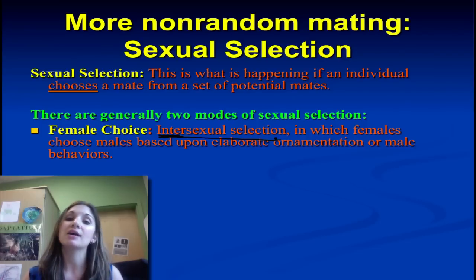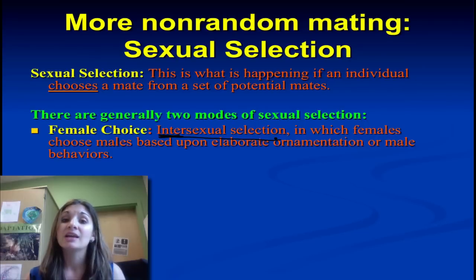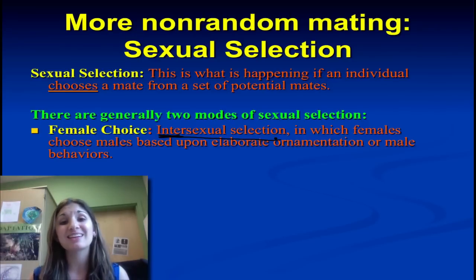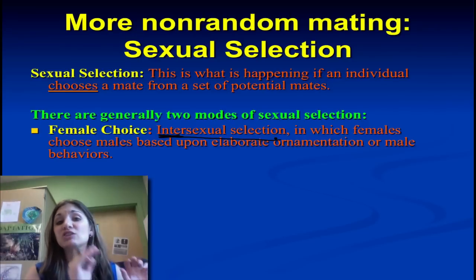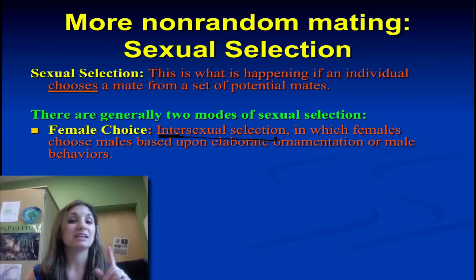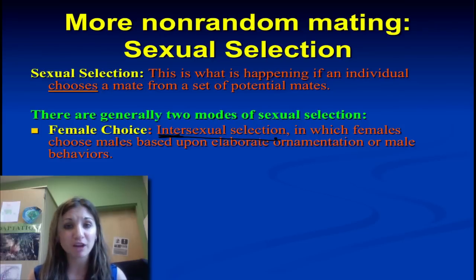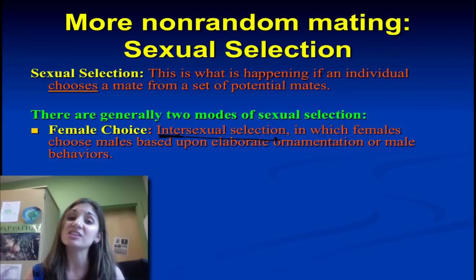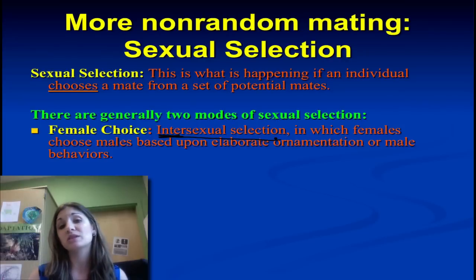A classic example is the peacock's tail. Male peacocks — the bigger, the brighter the tail — females prefer that. In order for bigger, brighter tails to persist in the population, it has to truly indicate that the male peacock is really fit and well suited for the environment: that it's able to get enough nutrition to support that tail and has the skills to avoid predators. If that is an honest indicator that females base their choice on, then we'll see that spread through the population.